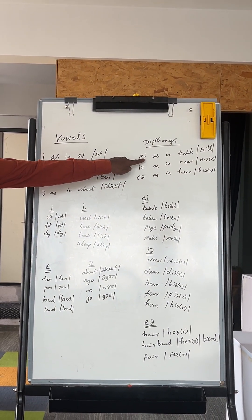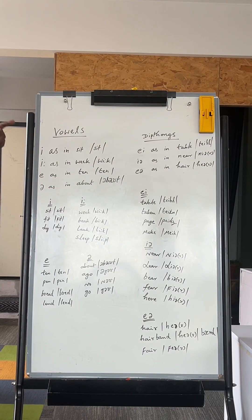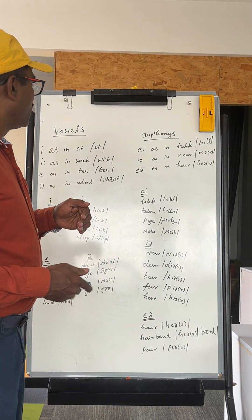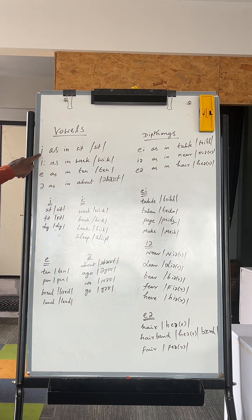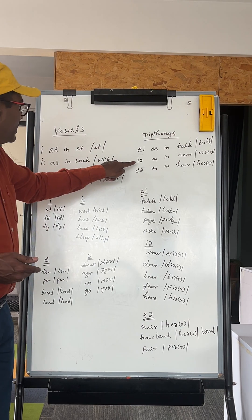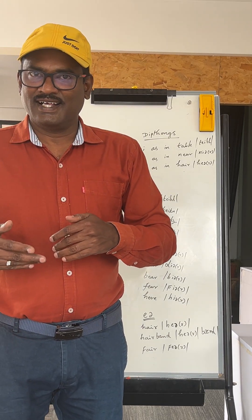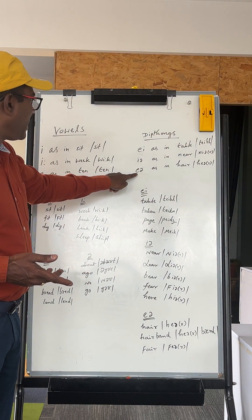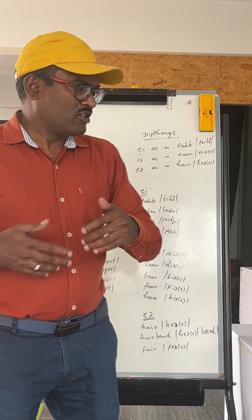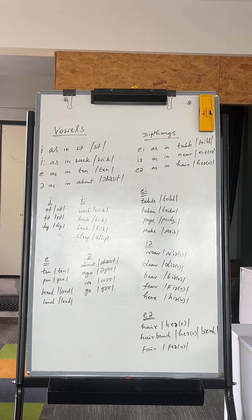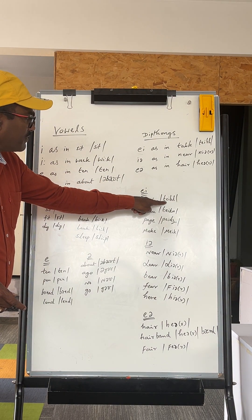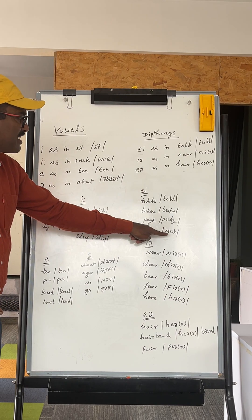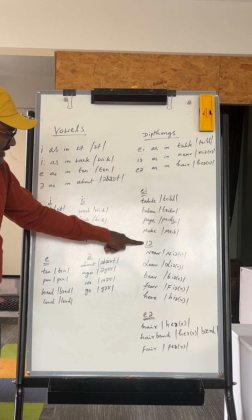See — Caye. E as in Caye. E as in your. Yay as in table, Yay as in taken, Yay as in page, Yay as in make. And this is Ia.